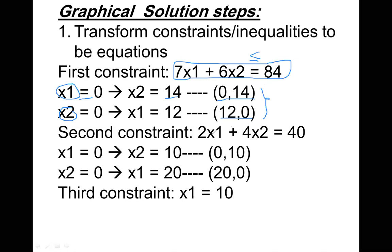The second constraint: 2x1 plus 4x2 less than or equal to 40. Transform to equation: 2x1 plus 4x2 equals 40. Find two points: set x1 equals 0, then x2 equals 40 divided by 4 equals 10 — first point (0, 10). Set x2 equals 0, then 2x1 equals 40 so x1 equals 20 — second point (20, 0). These two points can be used to plot the second equation.